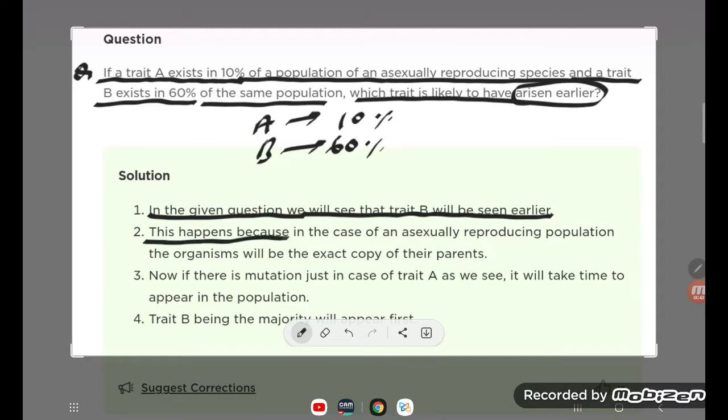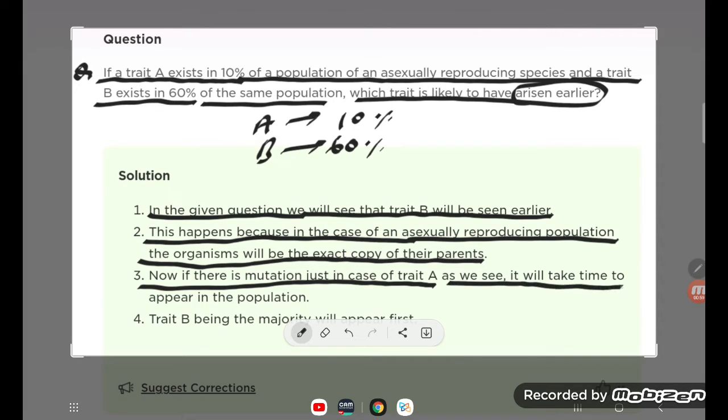This happens because in the case of an asexually reproducing population, the organisms will be exact copies of their parents. Now if there is mutation just in case of trait A, it will take time to appear in the population.